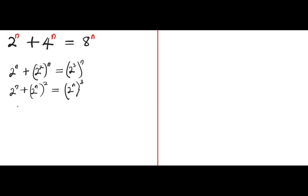The next step is for us to equate 2 to the power of n to a constant. In this case, we are going to use a variable p. So we say let 2 to the power of n equal p. Now that 2 to the power of n equals p, we insert p wherever we have 2 to the power of n. So we have p plus p squared equals to p to the power of 3.